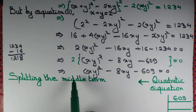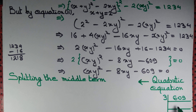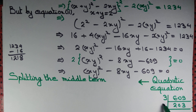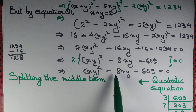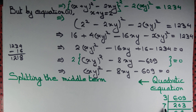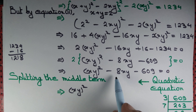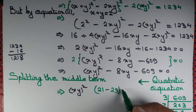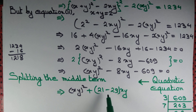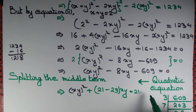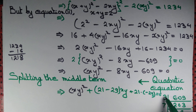This is a quadratic equation in xy, so we apply the splitting-the-middle-term method. We need to factor 609: 609 ÷ 3 = 203, 203 ÷ 7 = 29, and 29 × 1 = 29. We need two numbers whose difference is 8 and product is 609. Since 7 × 3 = 21 and 21 - 29 = -8, we split -8 as 21 - 29. So: (xy)² + 21xy - 29xy - 609 = 0.